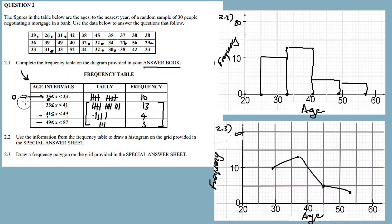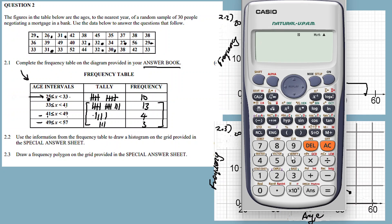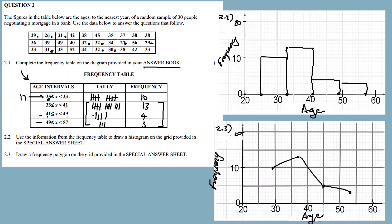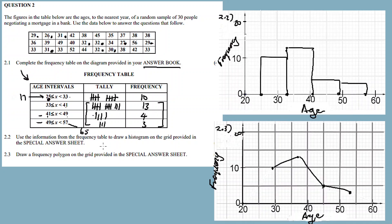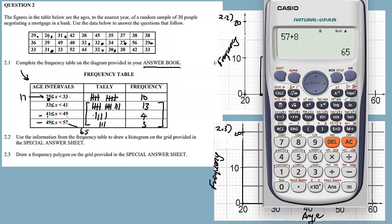Actually, not from 0. The interval width is 8, so the interval before 25 starts at 25 minus 8 = 17. That interval goes from 17 to 25. And the interval after 57 ends at 57 plus 8 = 65. So the polygon extends from 17 to 65.